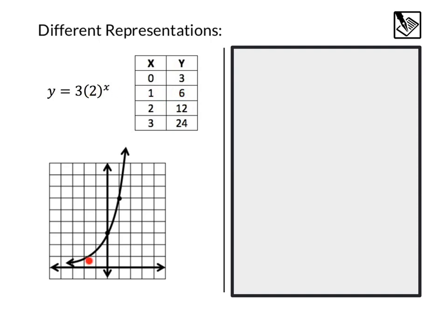And then of course we can graph this on the plane. We can see we have our starting point — that's the y-intercept. Our multiplier: this y value is 3. If we multiply that by 2, our next value is going to be 6, and the next value would be 12, and so on.